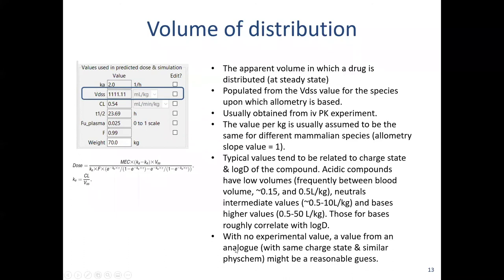Moving on to volume of distribution: this is also going to be populated from the volume value for the species on which your allometry is based. You usually get this from an IV PK experiment. It's usually assumed that the value per kilogram is the same for different species — in other words, in the allometry the slope value is one.